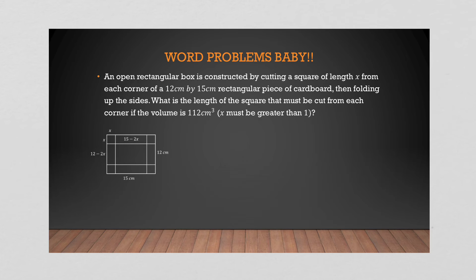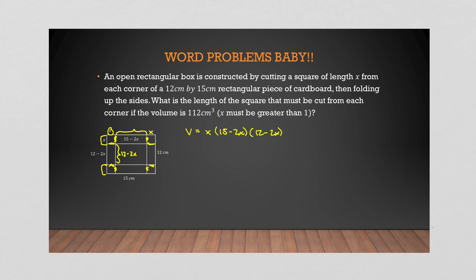Here we have an open rectangular box. We've cut a square of side x out of each corner, so you fold the flaps up. The resulting length is 15 − 2x (removing x from each end), the width is 12 − 2x (removing x from each side), and the height becomes x — how much you've folded up. The volume is x(15 − 2x)(12 − 2x) = 112.